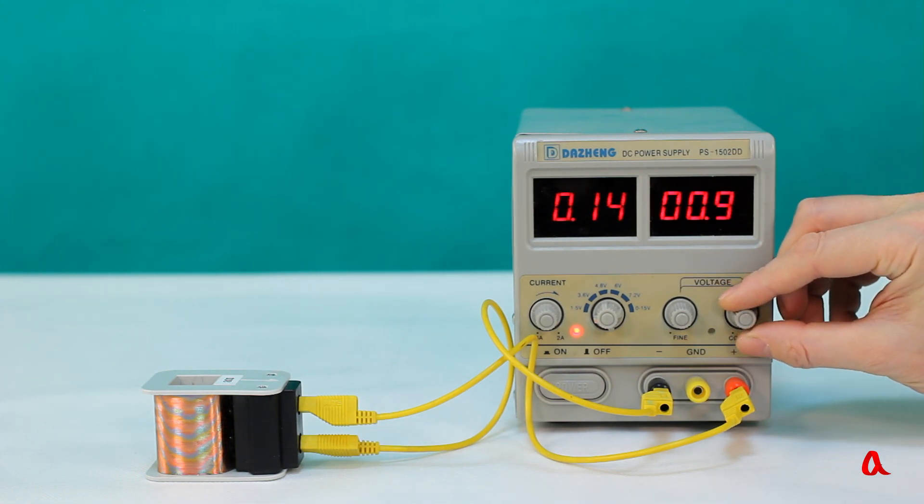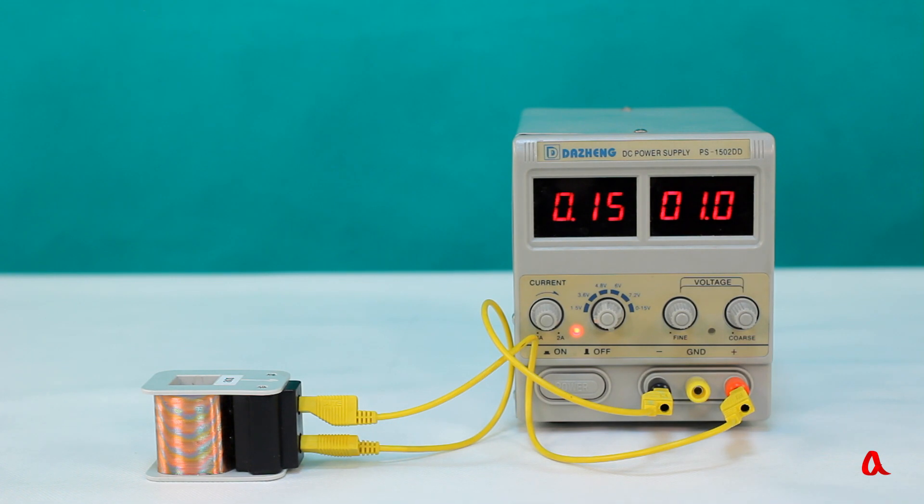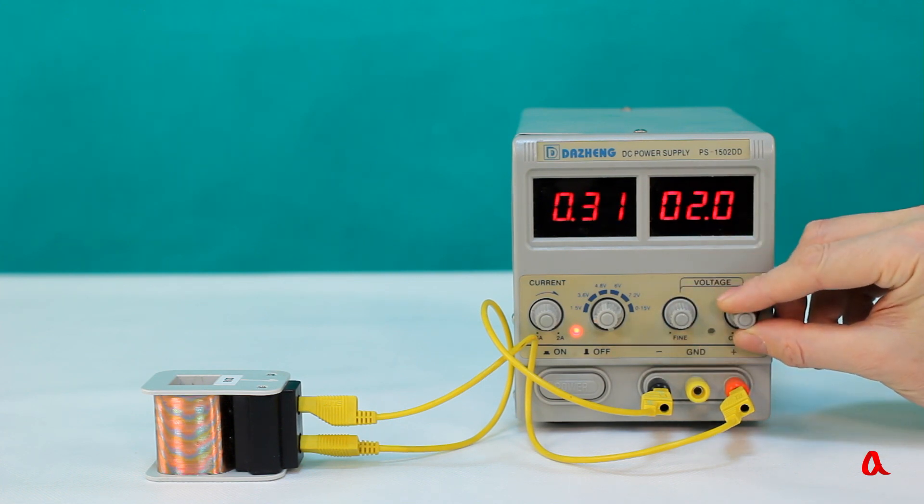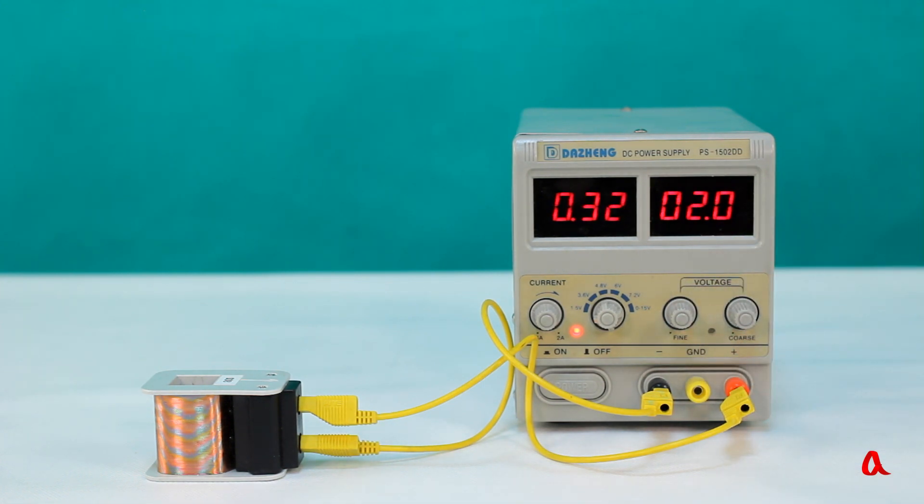At the voltage of 1 volt, the current of 0.15 ampere flows through the coil. If we increase the voltage to 2 volts, the current becomes 2 times greater.